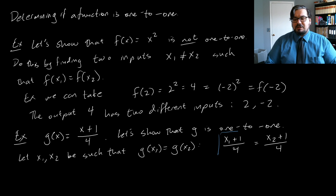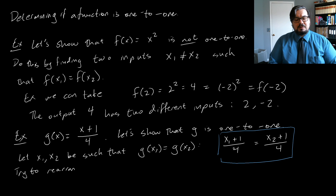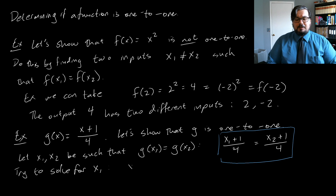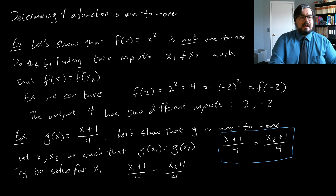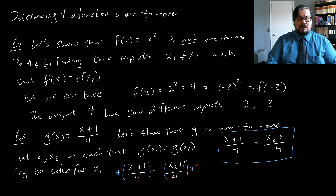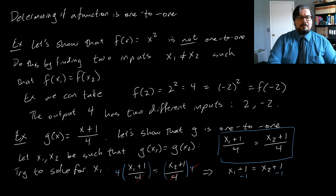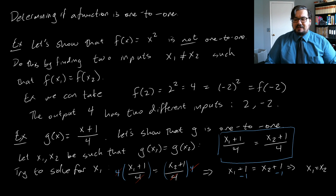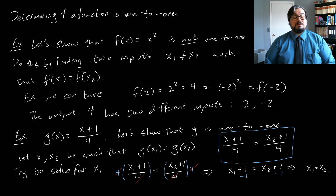If we take the equation x₁ + 1 over 4 equals x₂ + 1 over 4 and multiply both sides by 4, we get cancellation of all the denominators, giving x₁ + 1 = x₂ + 1. Subtracting 1 from both sides gives x₁ = x₂. So we found that if g(x₁) equals g(x₂), then x₁ must equal x₂ — which is exactly the definition of g being one-to-one.